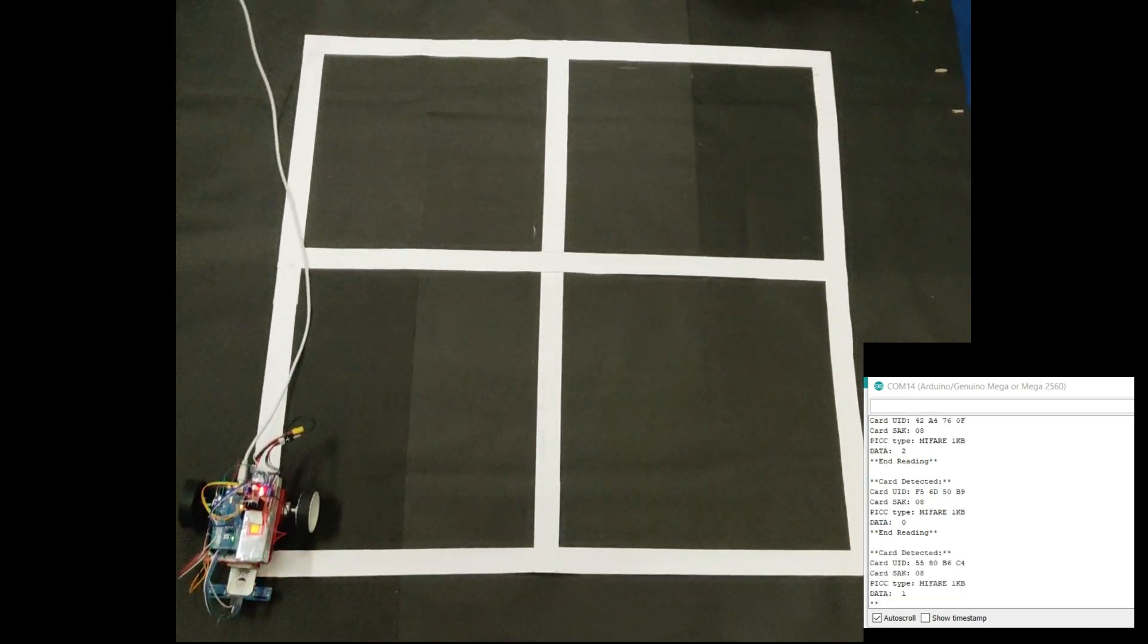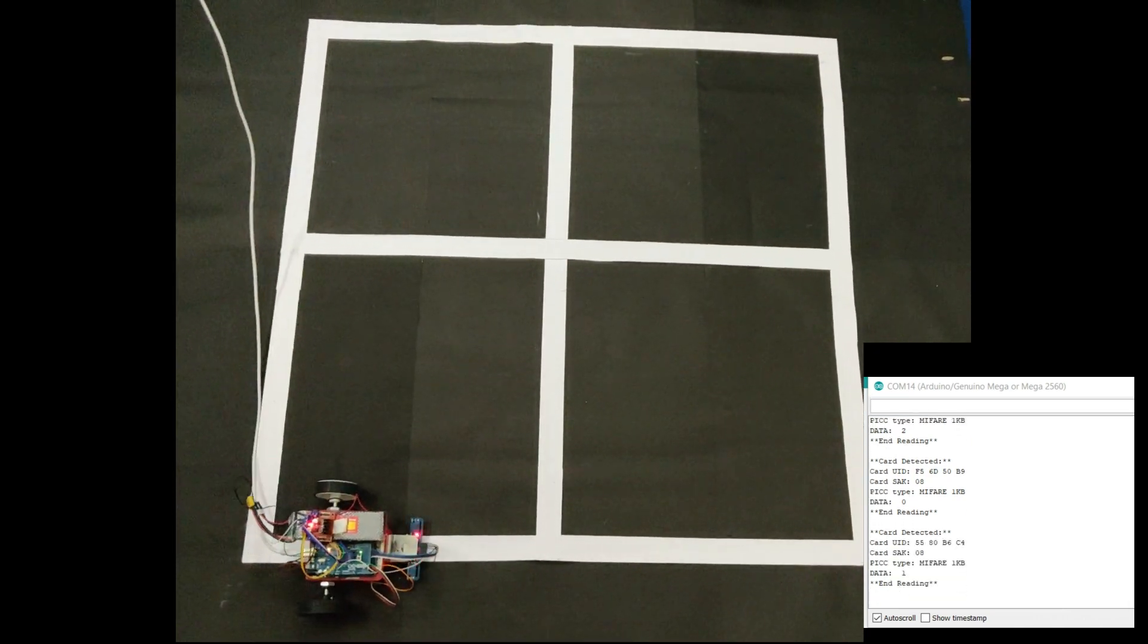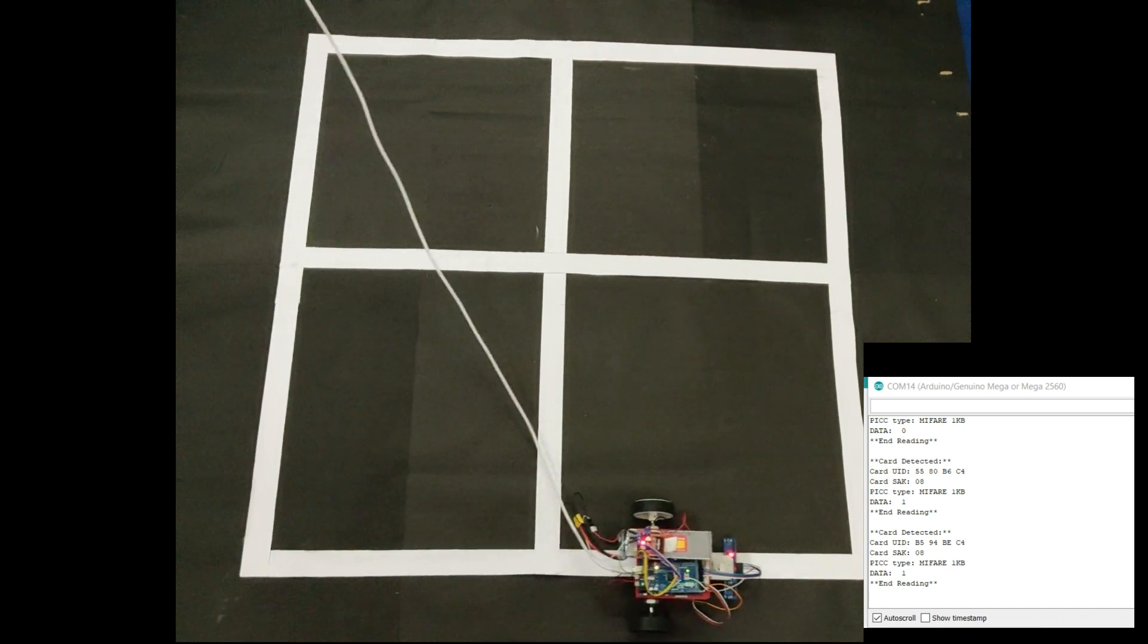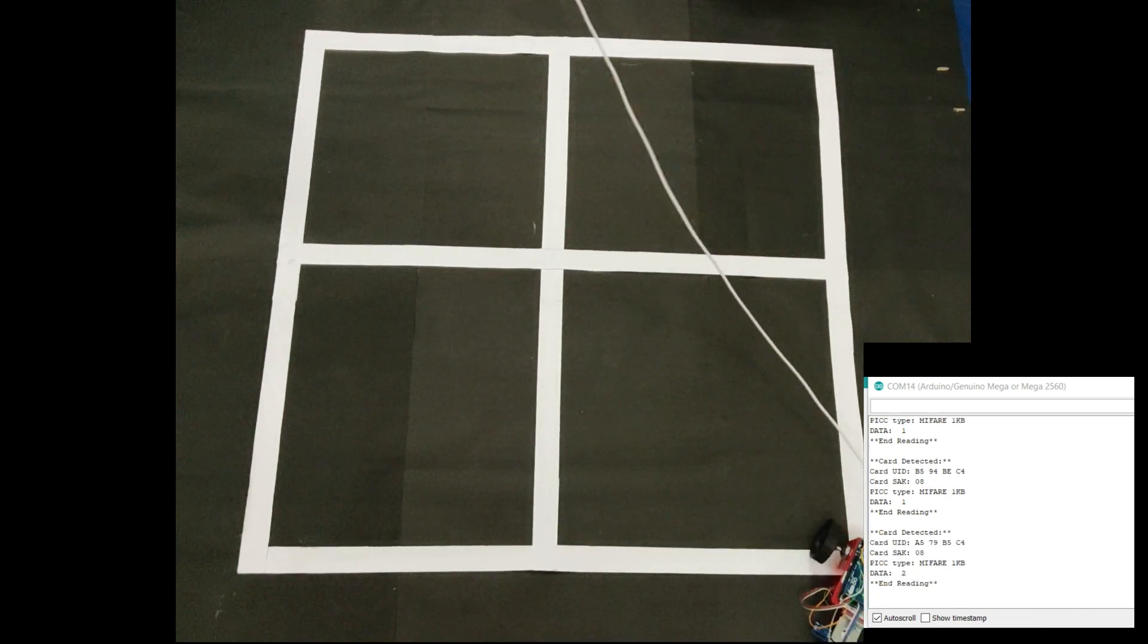As you can see in the video, the bot first traverses the arena from beginning to end, reading the data from all the RFID tags and displaying them on the serial monitor.